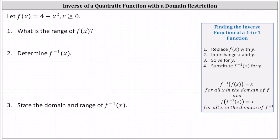Let f of x equal four minus x squared, where x is greater than or equal to zero. Notice here we have what's called a domain restriction — we only want the function f of x when x is greater than or equal to zero. Let's go ahead and state this domain using interval notation. If x is greater than or equal to zero, using interval notation, we have the interval from zero to infinity. Because the interval includes zero, we use a square bracket to the left and a parenthesis to the right.